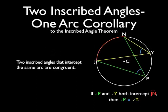This is really easy to prove because the measure of angle P is half the measure of arc JN. The measure of angle Y is half the measure of arc JN. So by the transitive property of equality, their measures are equal. So if the measures of two angles are equal, the angles are congruent.